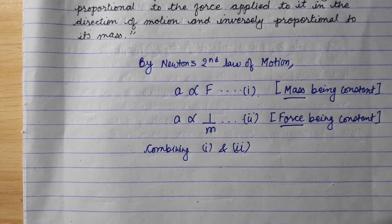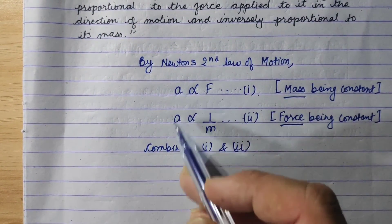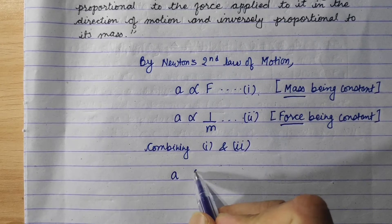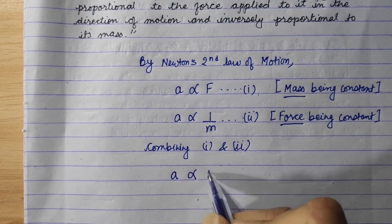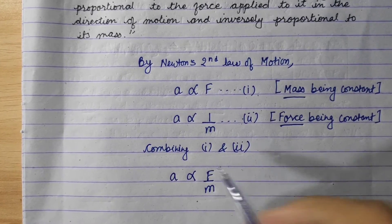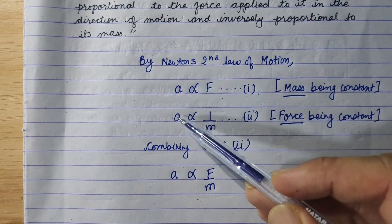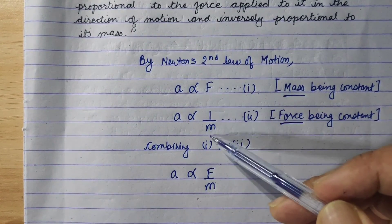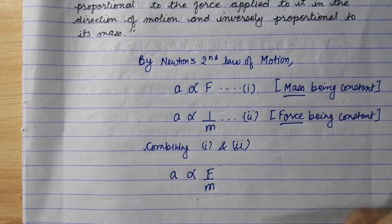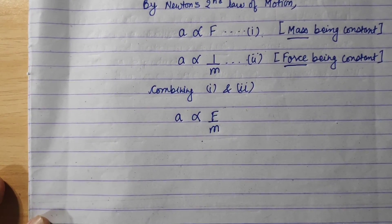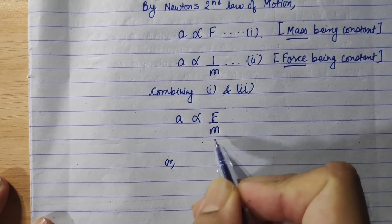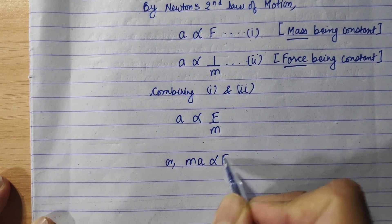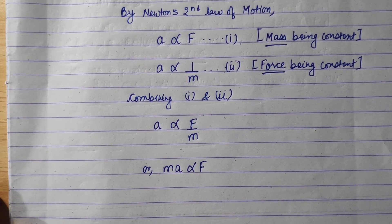If you combine these two relations, the proportional sign combines so that acceleration is proportional to F over m, or equivalently, ma is proportional to F.